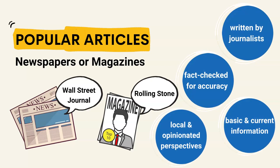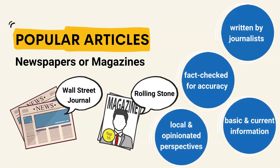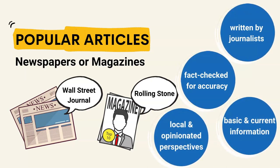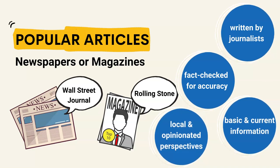Popular articles found in magazines or newspapers can be a good place to start. These articles are usually written by journalists, not experts on the topic, so they provide basic information to introduce a topic or provide updates on current developments. Popular articles can be a good source for local information, informed opinions, and to see how the topic is discussed in society.